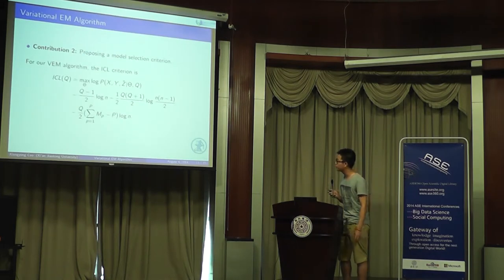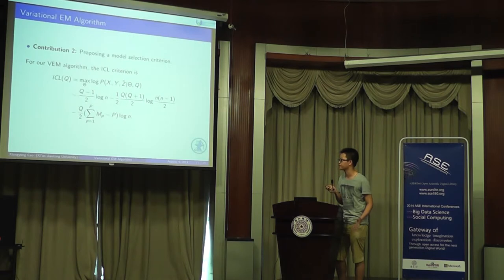Next, we have another contribution. Based on the VEM framework, we propose a model selection criterion to select the number of groups. For our VEM algorithm, our ICL criterion is: first is the joint distribution, the second term is penalizing the parameter alpha, the third term is penalizing the parameter pi, and the fourth term is penalizing the parameter theta. This criterion is similar to BIC and AIC. If you are interested in the proof, you can see my paper.